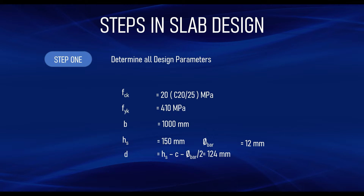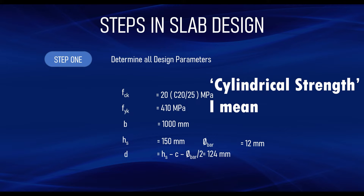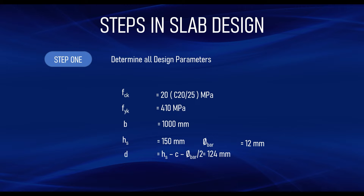The 25 means the characteristic cube strength of concrete. Concrete can be tested using two methods: the compressive test and the cube test. According to the Eurocode, we only use the compressive strength of concrete to carry out design. The next parameter is fyk, which stands for the characteristic strength of steel. In this class we are assuming a value of 410 MPa. In the Eurocode you have the privilege of designing with steel strength ranging from 400 to 600.